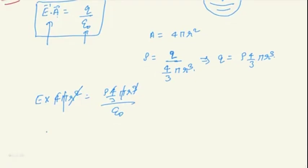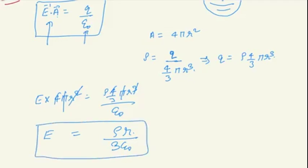So E is equal to rho r upon 3 epsilon naught. This is the answer. I hope you understood. Thank you.